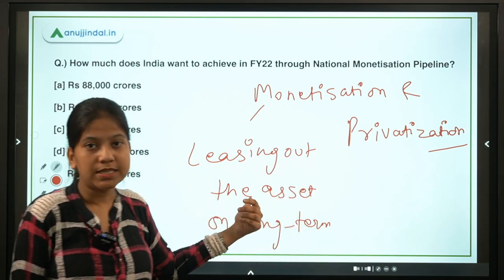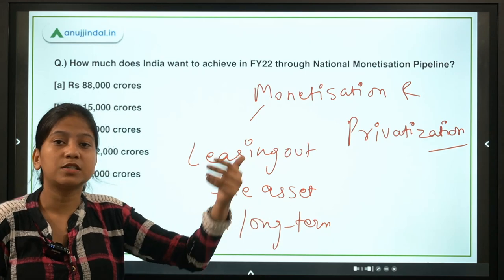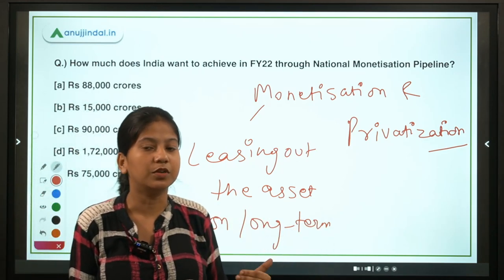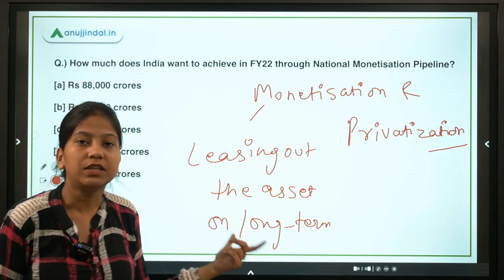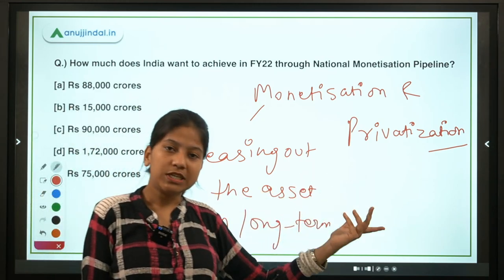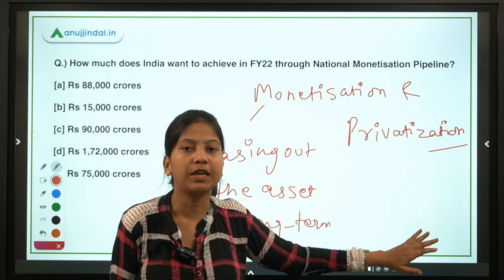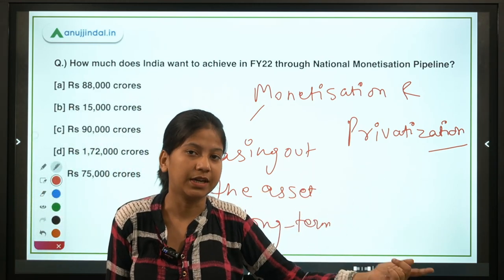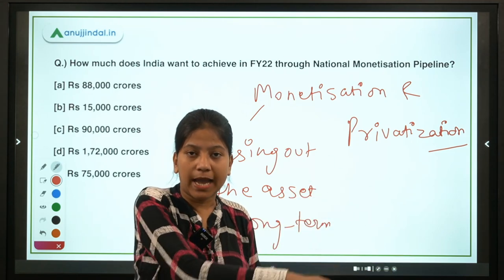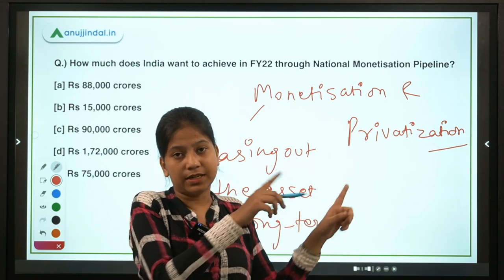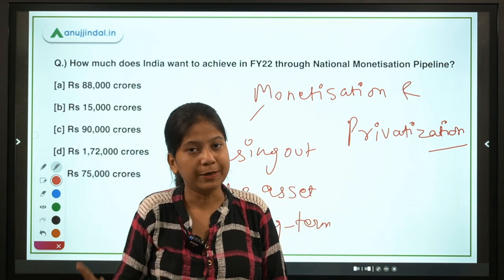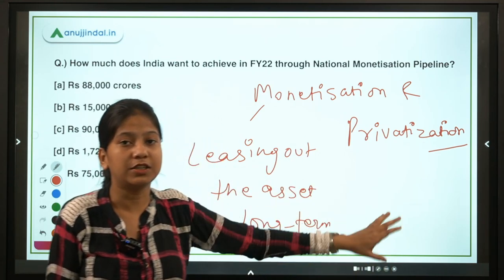In monetization, the private entity is bound to return the asset to the government after the expiry of the lease period. In privatization there is no lease period and no obligation on the private entity to transfer the asset back to the government. That is the key difference.